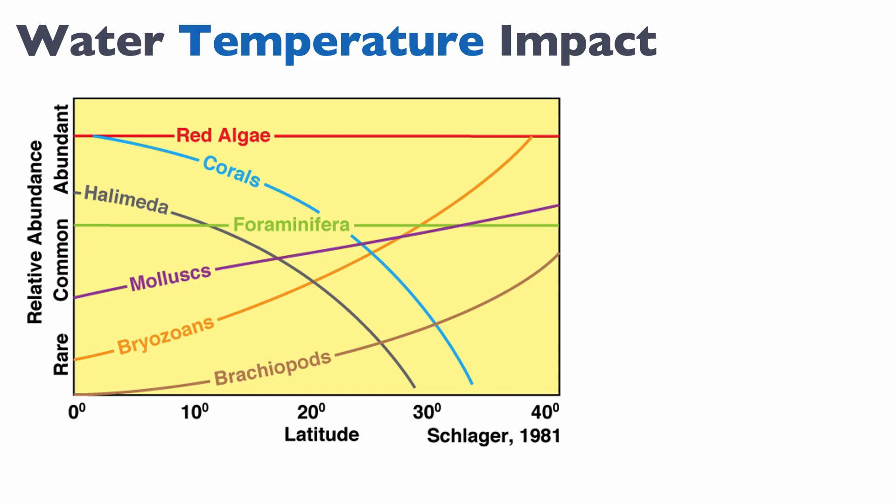And it's striking how halimeda and corals, that are the backbone of T factories in the modern world, at least in the Bahamas, start to decline as you go further away from the equator. Even at 10 or 20 degrees north, you already have less halimeda, less corals, and they tend to disappear at 30 to 35 degrees north or south. They are replaced in terms of abundance by mollusks, bryozoans, and brachiopods. These guys tend to be more prevalent in colder water.